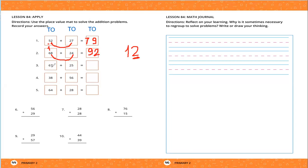67 plus 25: 7 in ones plus 5 in ones — 7 in my mind and 5 on my fingers. After 7: 8, 9, 10, 11, 12. I will write only 2 and carry up 1. Don't forget the carry. 1 plus 6 equals 7, then 7 plus 2 — 7 in my mind and 2 on my fingers. After 7: 8, 9. So the result equals 92.